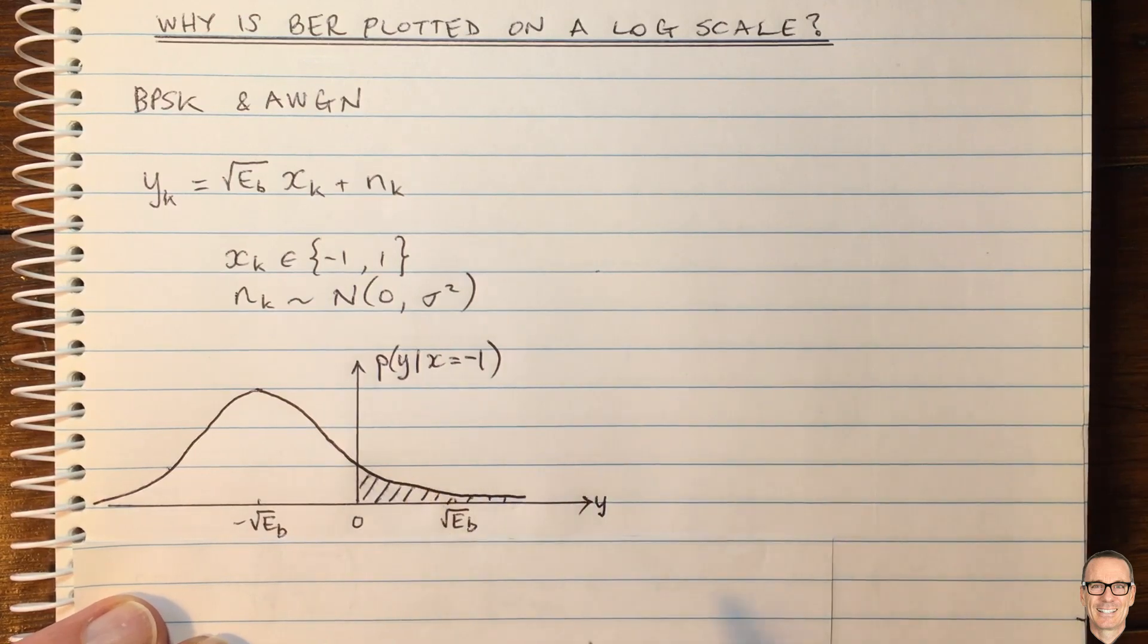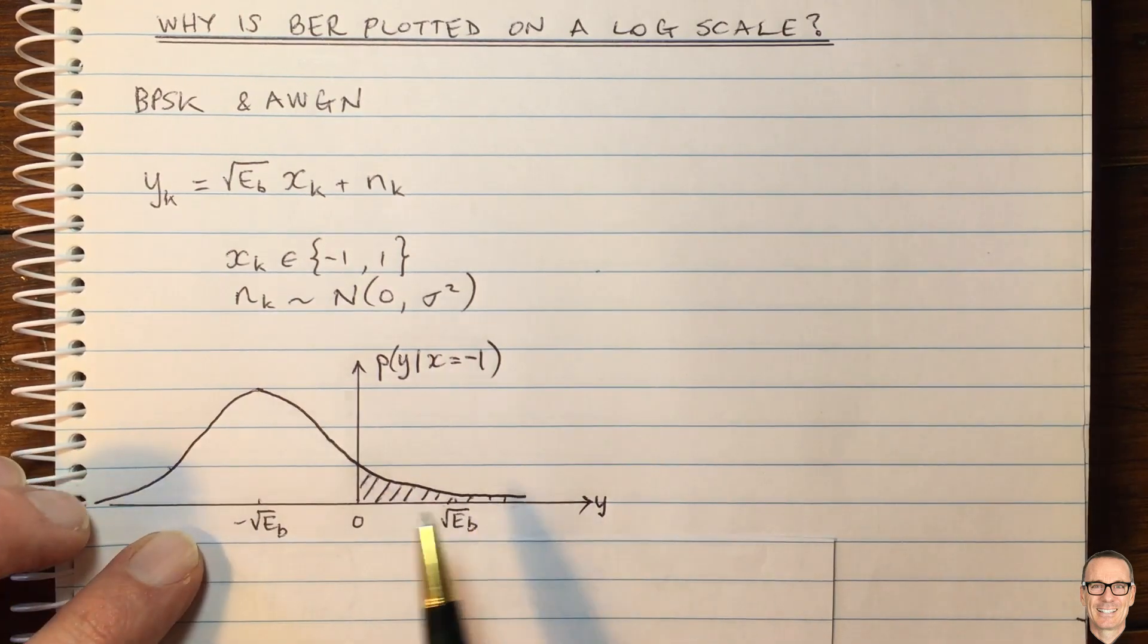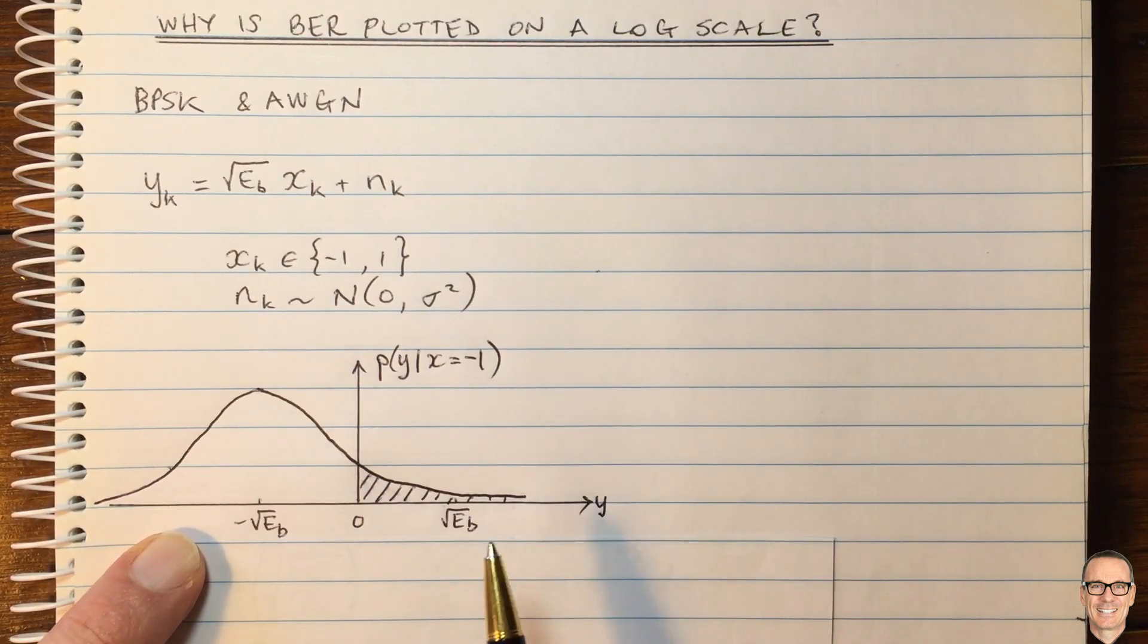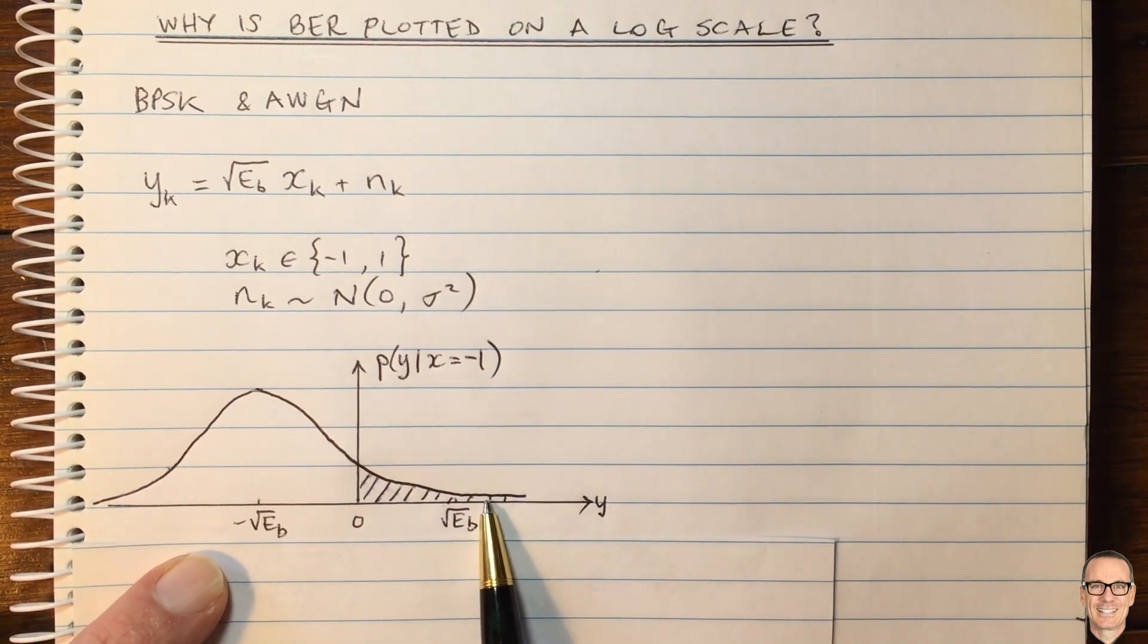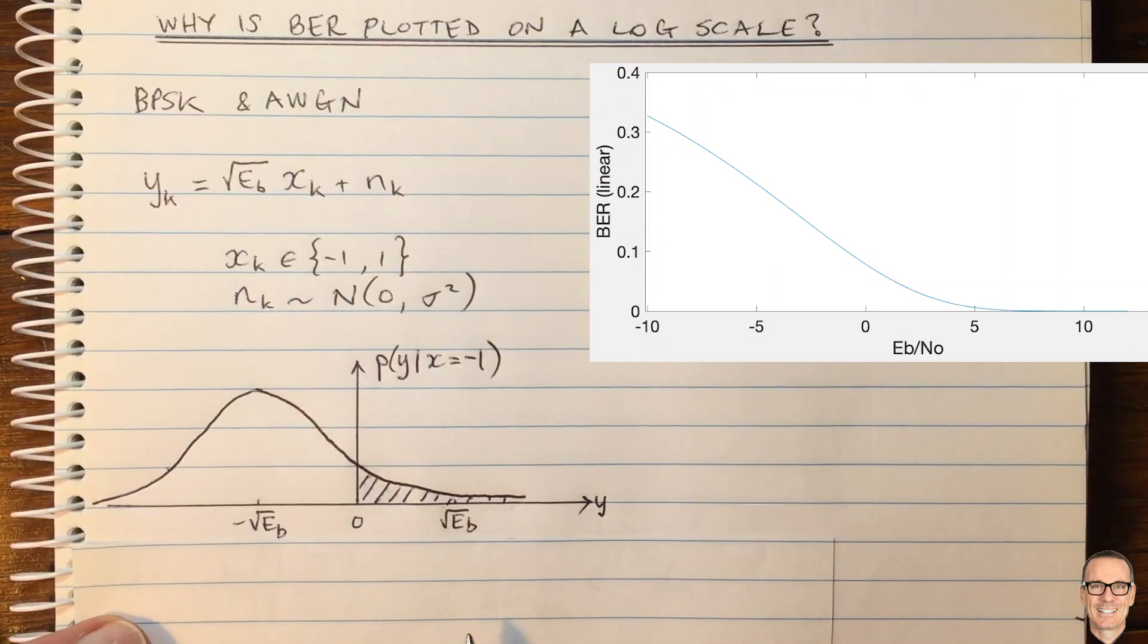And if we plot this, we'll see that the plot has this kind of a shape. It's not exactly the Gaussian because it's the area under a Gaussian, but it has a similar shape. And we're going to plot this up here. And that's what you can see if you plot with a linear scale.